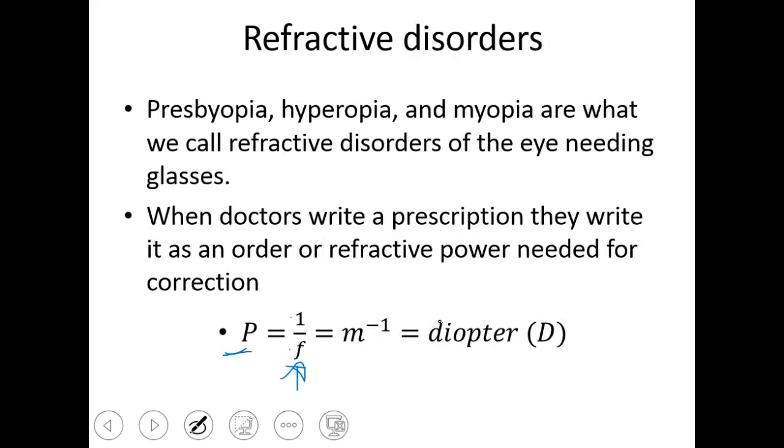So presbyopia, hyperopia, and myopia are all called refractive disorders. These are just a simple thing of saying you need glasses or you need contacts to fix this. When a doctor writes a prescription, it's an order of refractive power. And a doctor will usually write a prescription for each eye. And if you close your right eye and open your left and then do the opposite, usually one eye sees a little bit closer than the other. And so this is why you have a prescription for each eye.